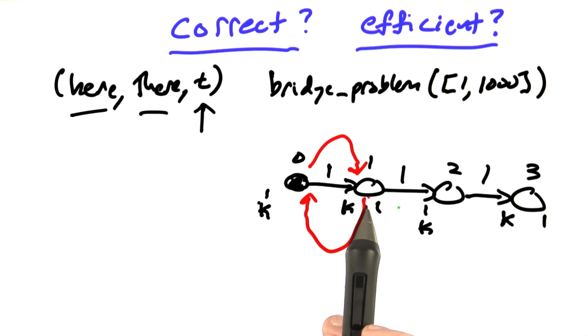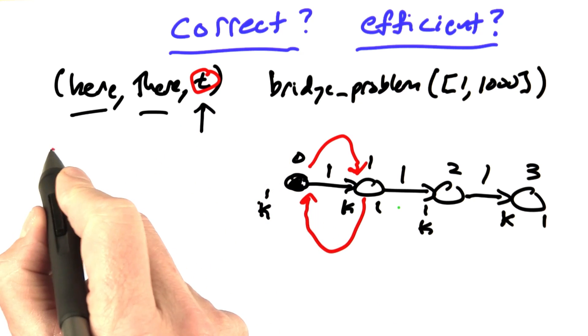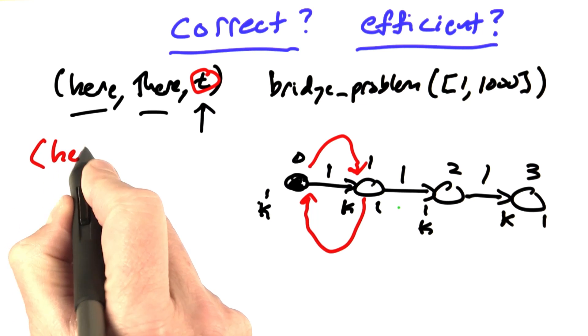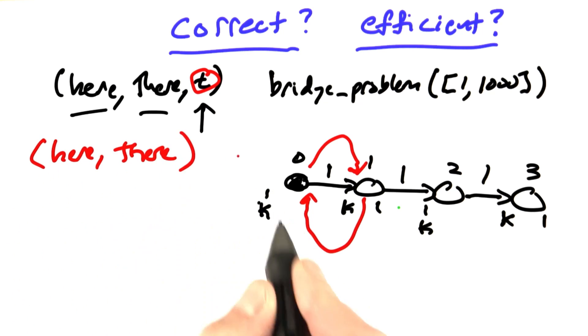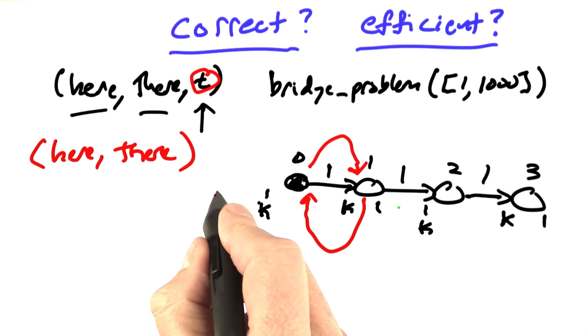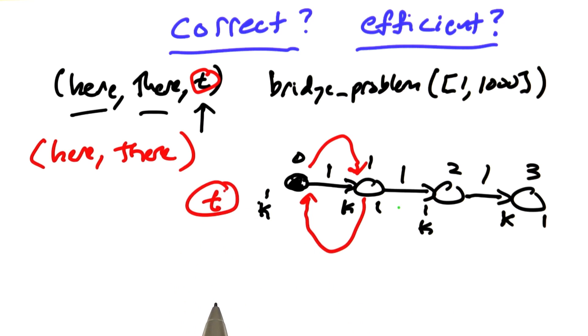In order to recognize that these are in fact the same states, we're going to have to take t out of our state and we're going to have to deal with the t someplace else. We want our representation of a state to be just here and there. We've got to figure out someplace else to put the t. I'm not sure what the right way to do it is, but why don't we do it this way?